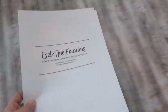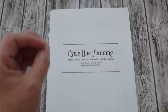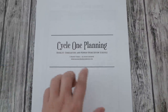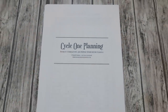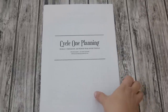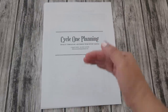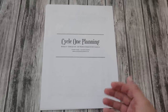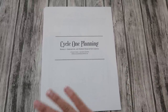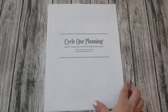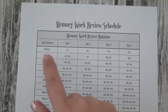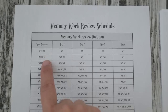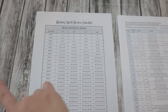Another thing we use a lot for memory work is the CC app. They have one for every cycle and it has all the memory work on the app. You can browse by week — swiping up to see memory work for each week in all subjects — or by subject. If you swipe left it stays on the same subject but moves through the different weeks, so it's very versatile and flexible. We use this either at a meal or I'll use it during our morning basket time.